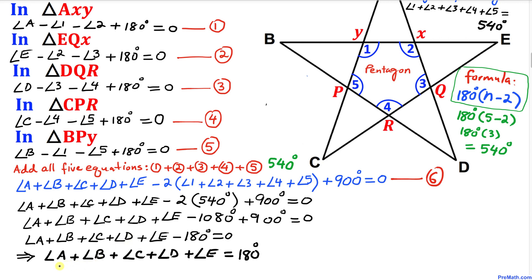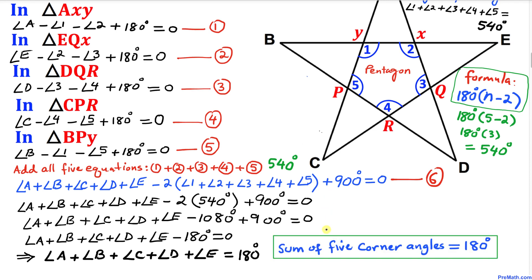After simplifying all the steps, we find that angle A plus angle B plus angle C plus angle D plus angle E equals 180 degrees. So once again we have concluded that the sum of the five corner angles of the star equals 180 degrees. Thanks for watching, and please don't forget to subscribe to my channel for more exciting videos. Bye!